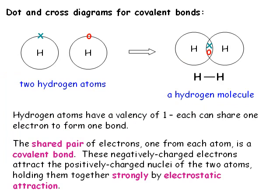Again, we use dot and cross diagrams to show the bonding, but these are different to ionic dot and cross diagrams. The simplest example would be the bond between two hydrogen atoms. Each atom has one electron. By sharing their one electron, they gain a share of one more, so each now has a share of two electrons, which is the maximum this shell can hold. We draw the outer shells as overlapping and put the shared electrons — one from each atom — in the intersection. These two shared negatively charged electrons are located between the positively charged nuclei of the two atoms and therefore hold the two atoms together by electrostatic attraction. Note that there are no ions formed — these are atoms that are bonded together, not ions.